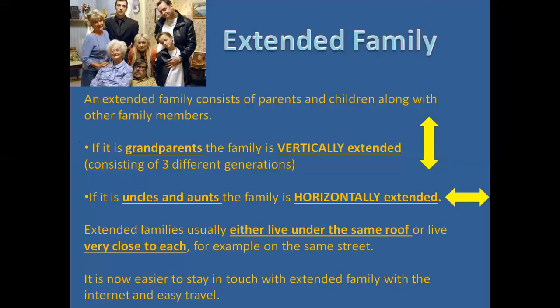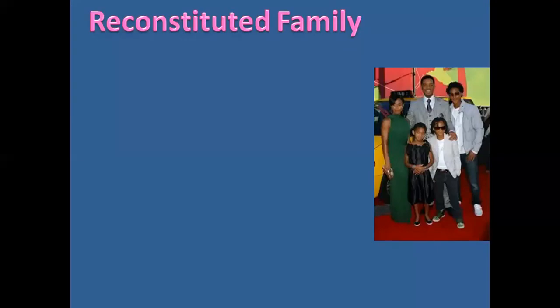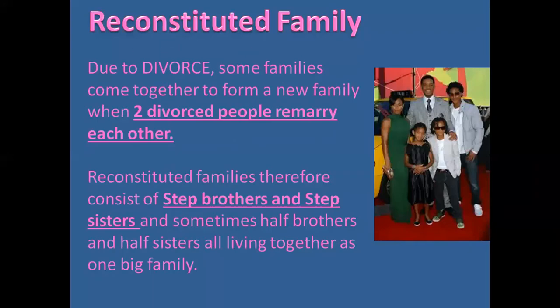Extended families usually live together or very close to each other, such as on the same street. It's also very easy to stay in touch with extended family in modern times due to the internet and easy travel — for example, using Skype to contact relatives in other countries. A reconstituted family is one that has come together because two divorced people have remarried, bringing children from previous marriages together as stepbrothers, stepsisters, or half-siblings. A good example is Will Smith's family.